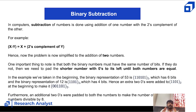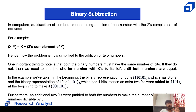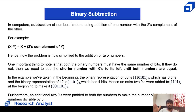For binary subtraction, the subtraction of x minus y is done by adding x to the two's complement of y. You take the two's complement of y and add it to x, which gives the same result as subtraction. One important point: both binary numbers must have the same number of bits. If they don't, add zeros to the left of the shorter number to equalize them.